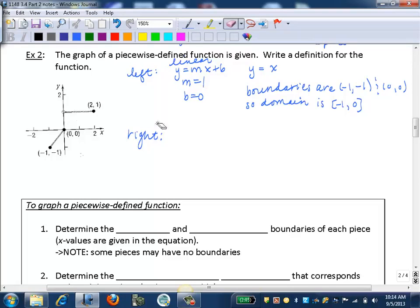So now in our right piece, we need to find the equation of this piece, and then we need to find the boundaries. This is also linear, but we can see that it's horizontal, so it's a constant function. So we know the equation of a horizontal line is just y equal to a constant, and the y value here, every point on this piece, is one. So our equation here is just y equals one.